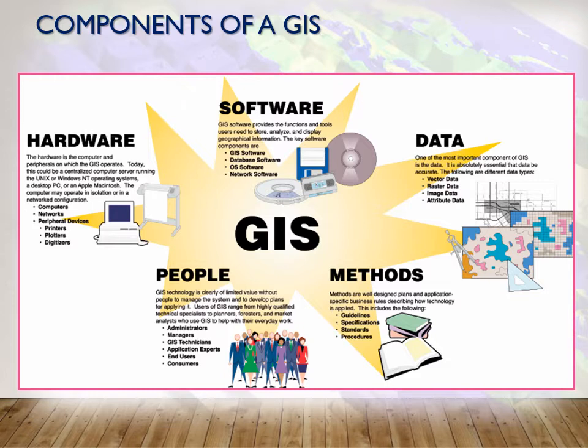GIS stands for geographic information systems. Geographic we understand — that's based off of geography. Information you can think of as data, usable data. But the systems part sometimes throws people. A lot of people think of GIS as just the software, just ArcGIS. But the word systems is in there because it's more than just the software. It's the hardware we use, it's the data, the people behind the software, and the methods we use — often spatial analysis. These five pillars — hardware, software, data, people, and methods — all compose GIS.